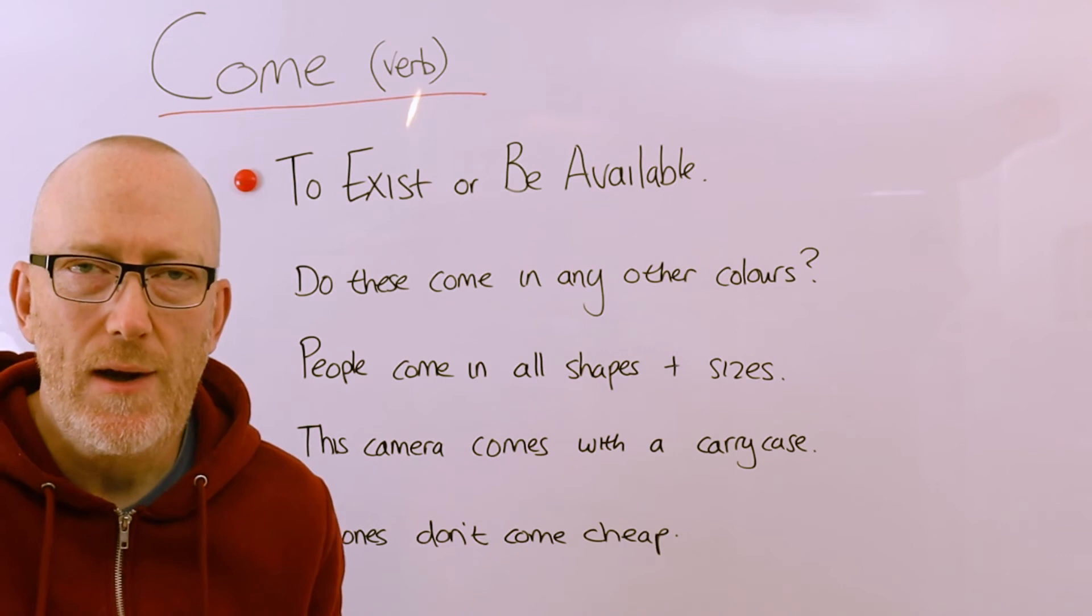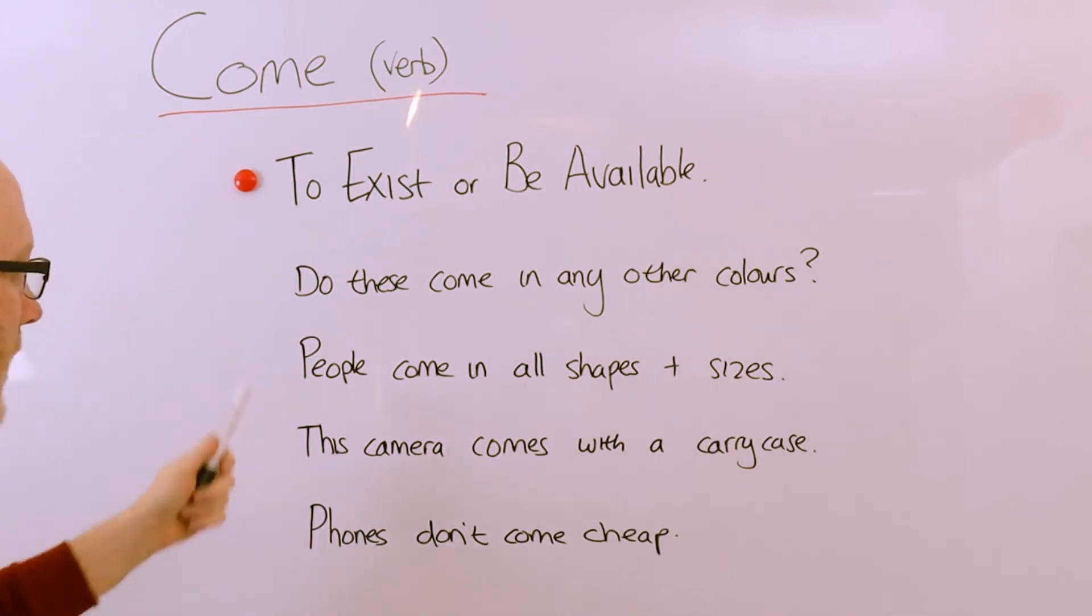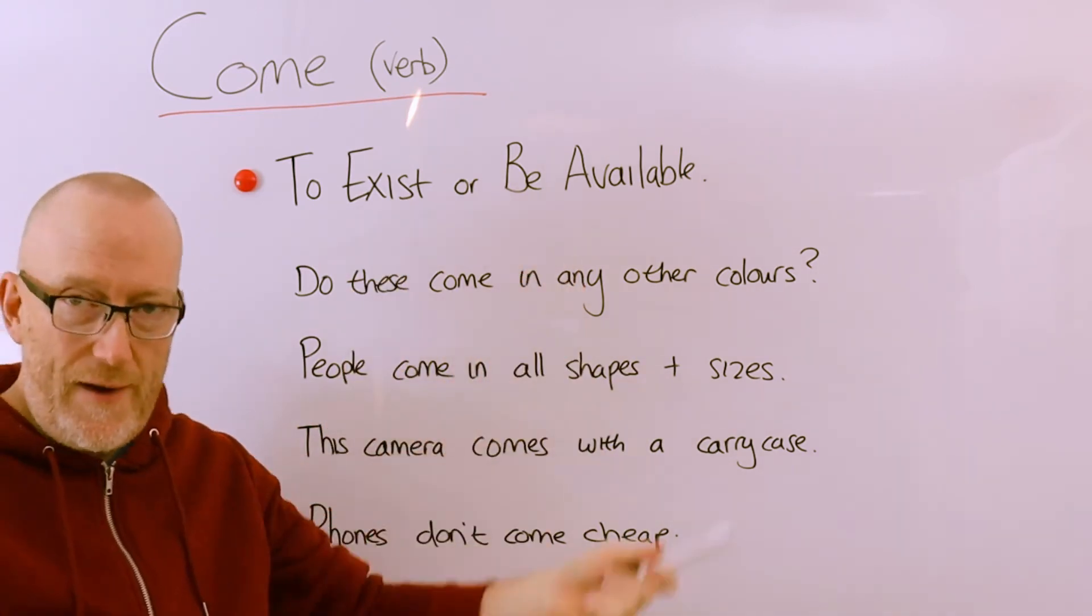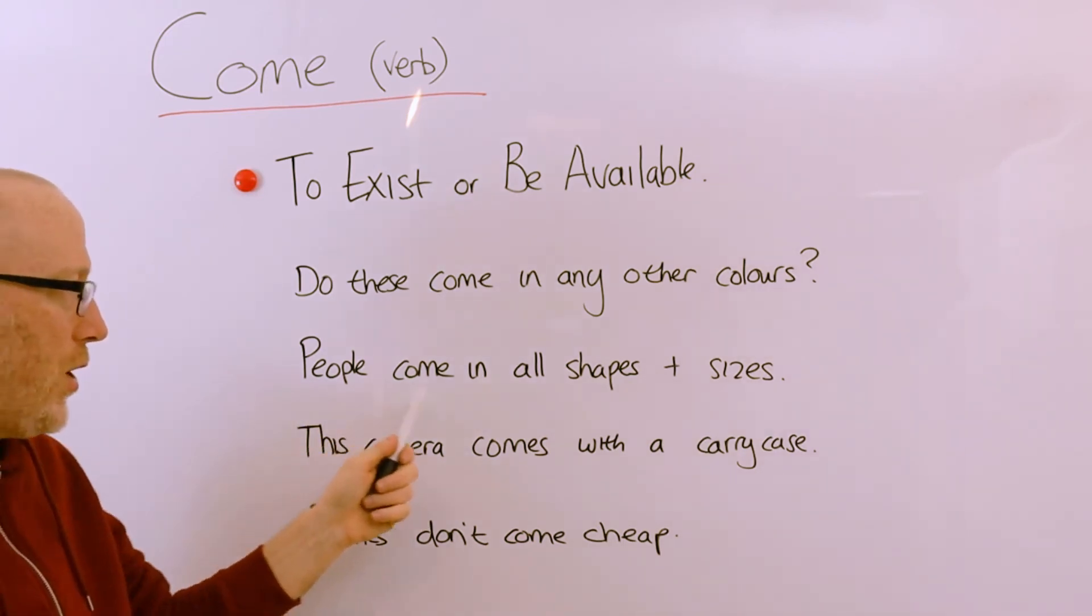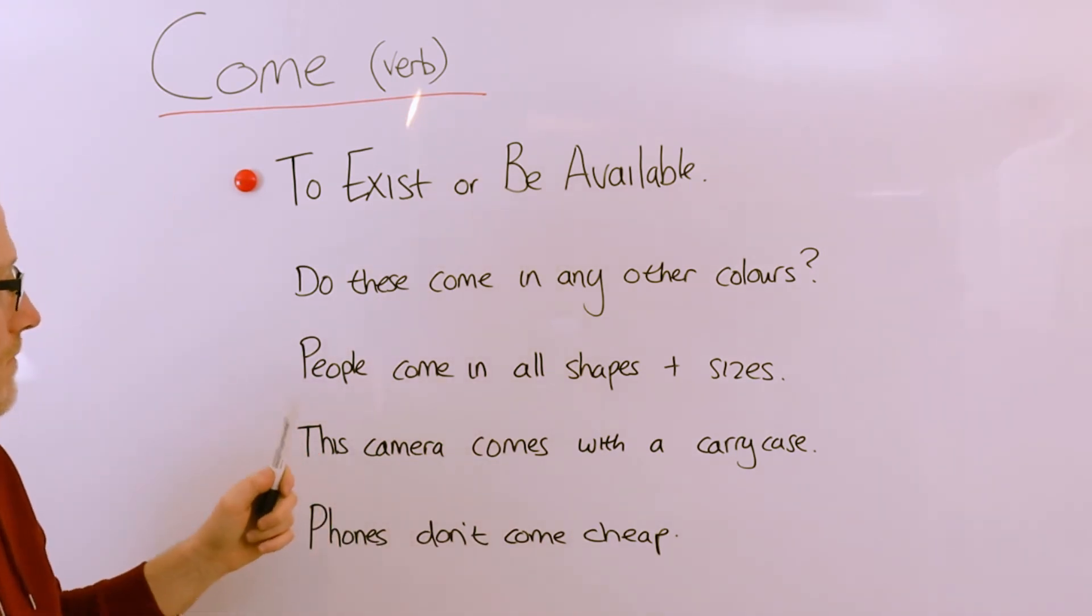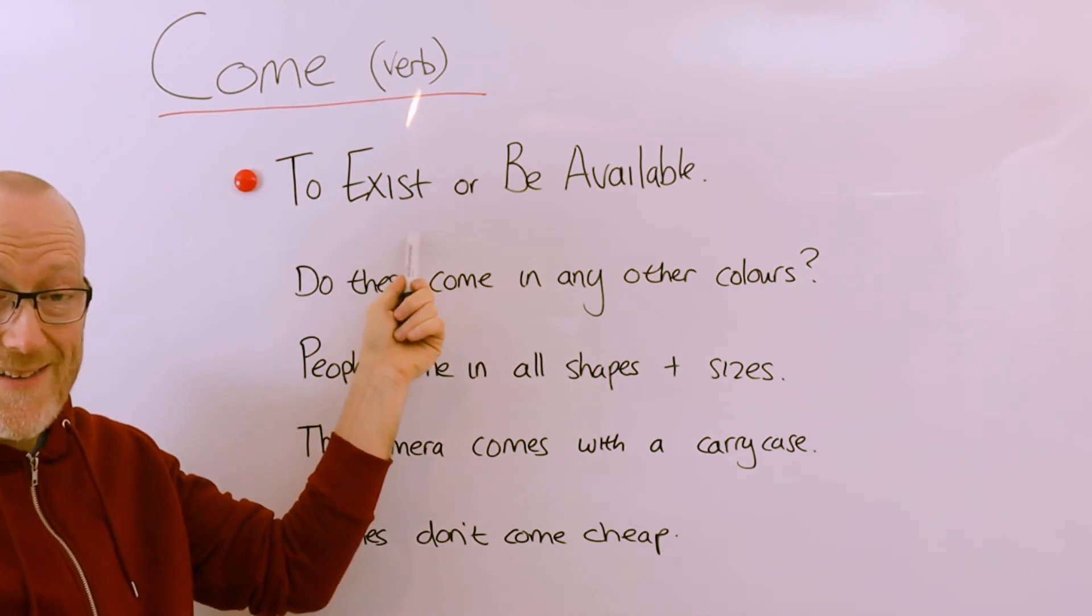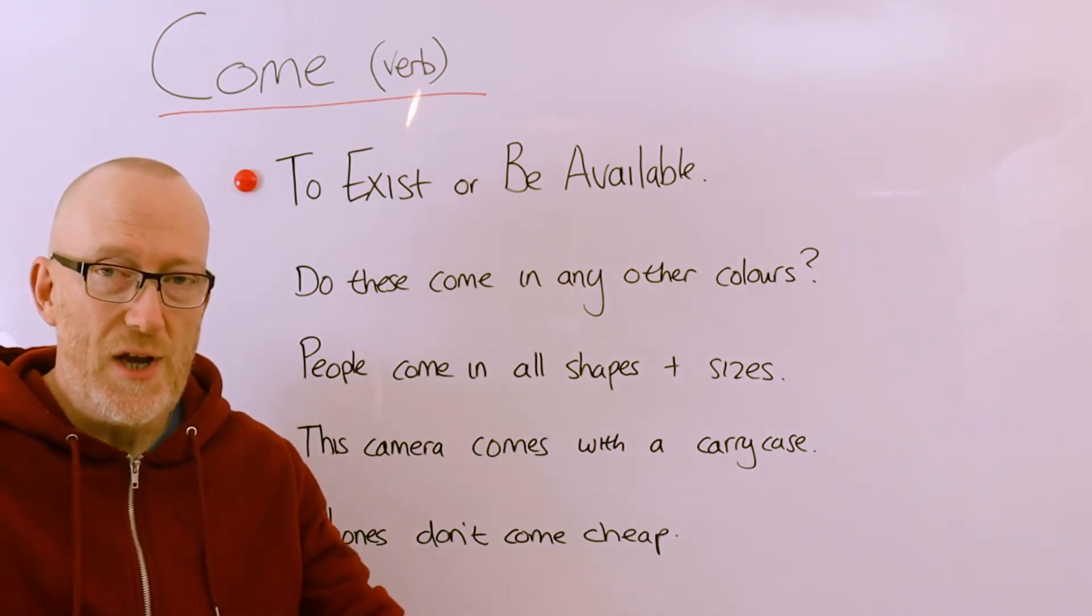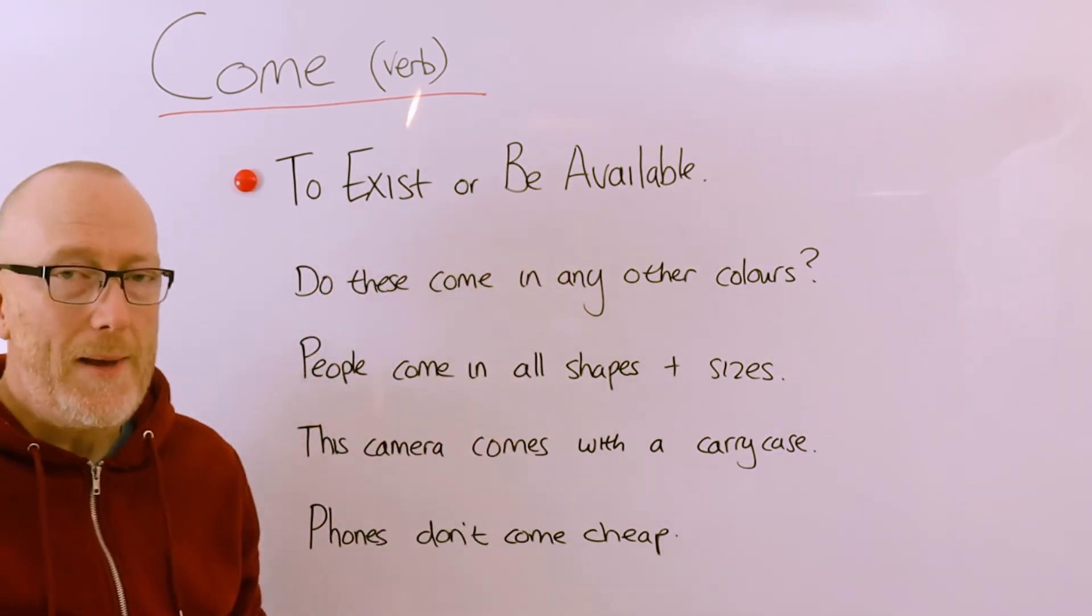Finally, let's take a look at using come to talk about things that exist or things that are available. For example, do these come in any other colors? Do any other colors exist, are any other colors available, or is black my only choice? People come in all shapes and sizes. All shapes and all sizes of people. This camera comes with a carry case. So this camera, there is available or exists, there exists a carry case for the camera. Phones don't come cheap. Phones don't come cheap because they're very expensive. So to talk about things that exist or are available, another example of being available.